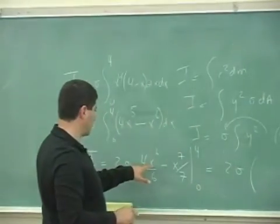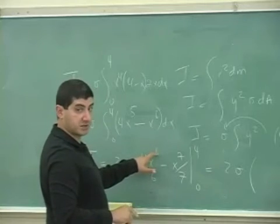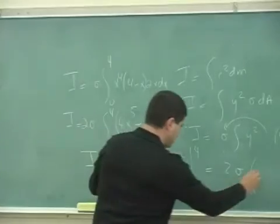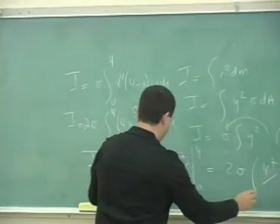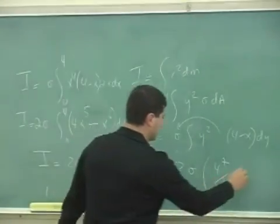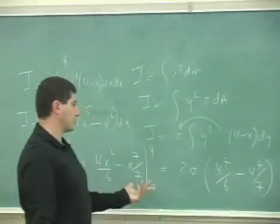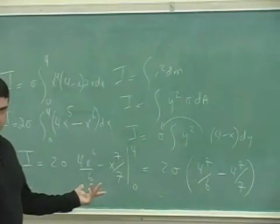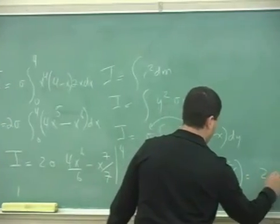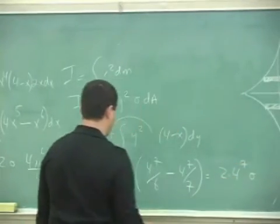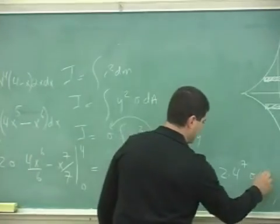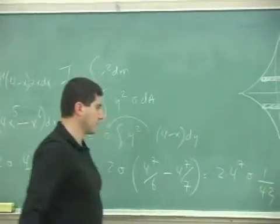So what do you have here? Four times four to the sixth. You put the four, so that's going to be four to the seventh. Divided by six minus four to the seventh divided by seven. So you could actually factor out the four to the seventh. Two times four to the seventh sigma times seven minus six is one, one over 42.